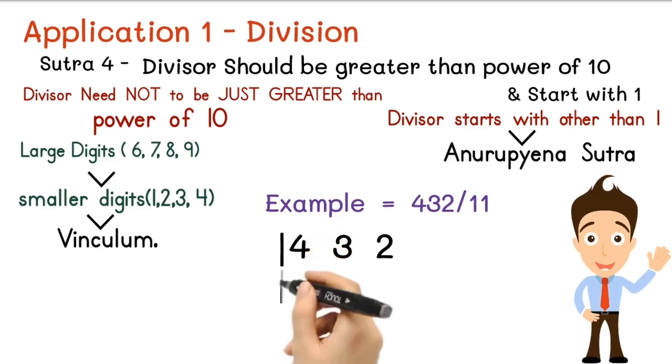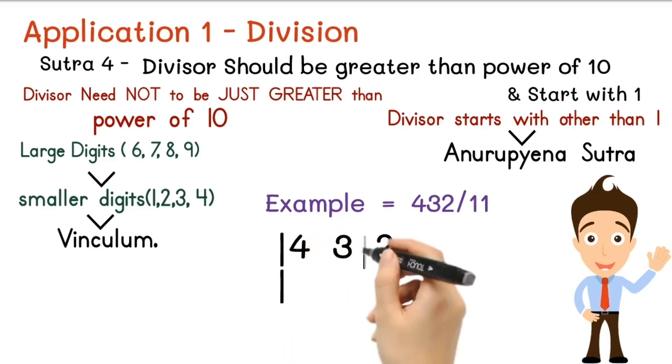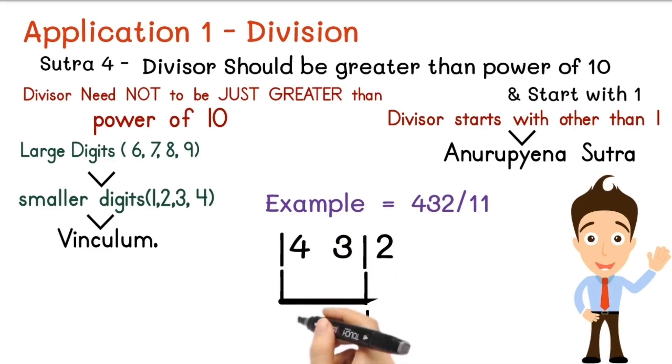Example is 432 divided by 11. For 11, base is 10. So we separate the last digit 2 by a line, which is known as remainder line, and write minus 1 here. Since 11 minus 1 equals 10, that's why we wrote minus 1 here.